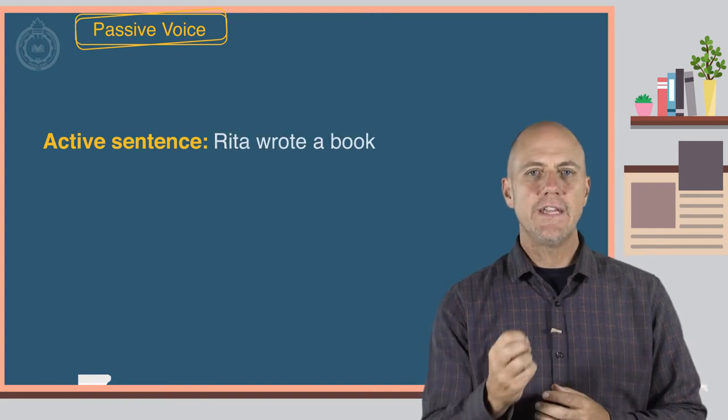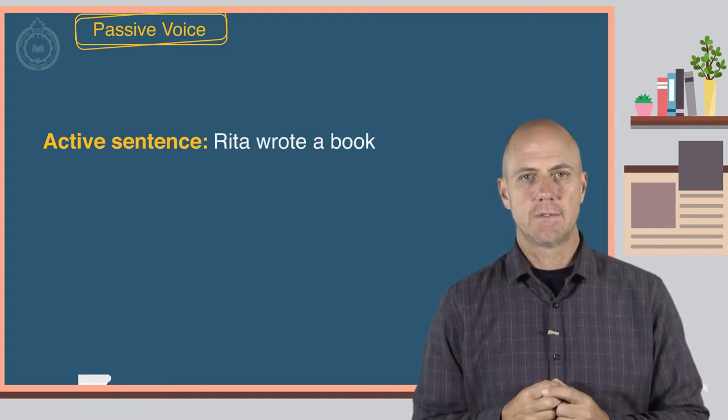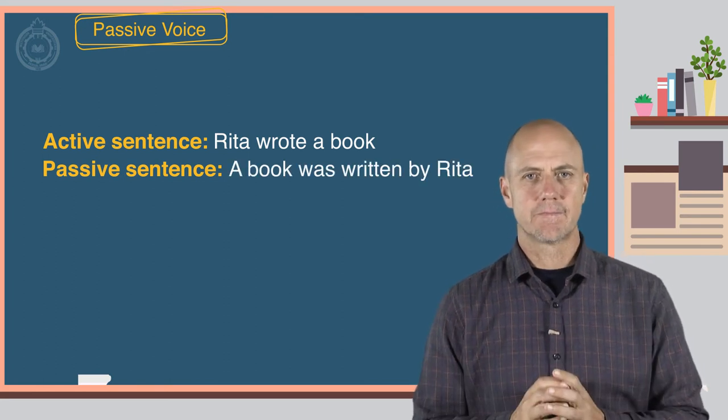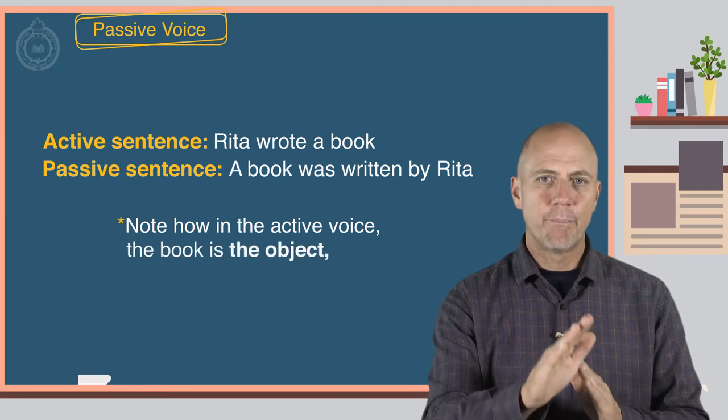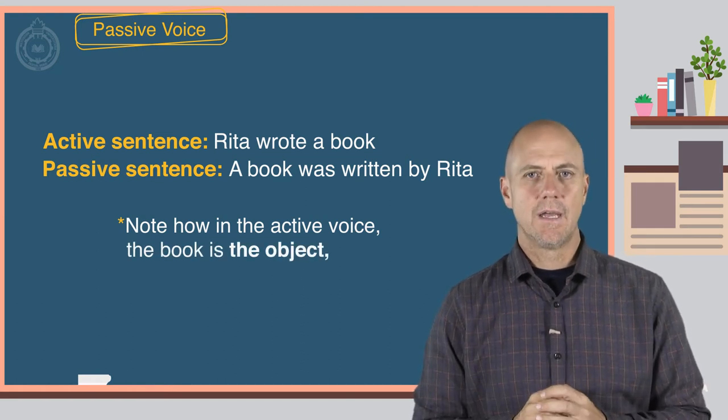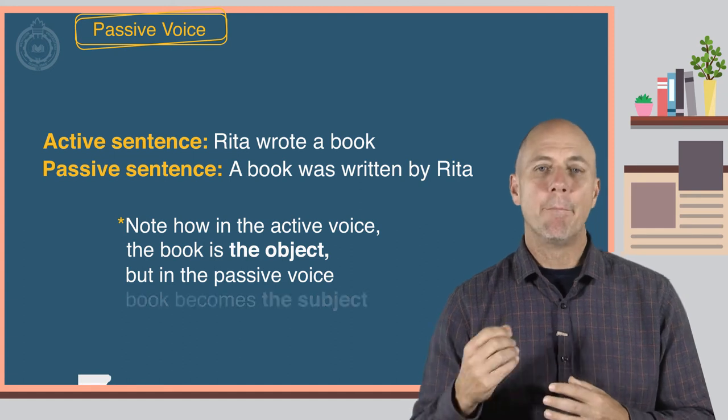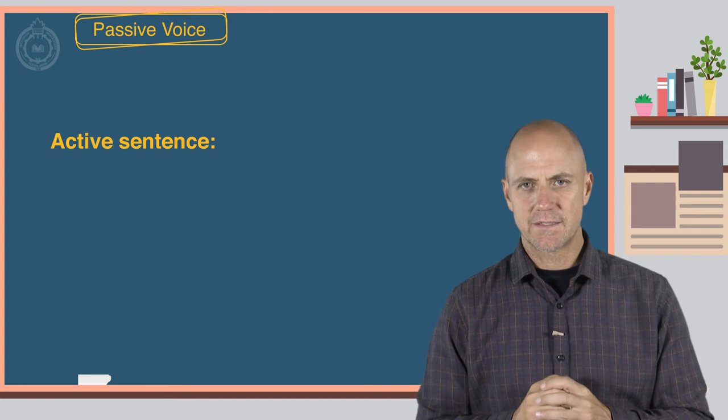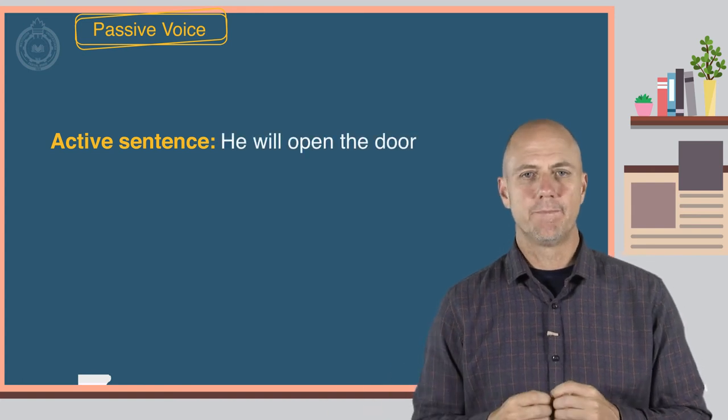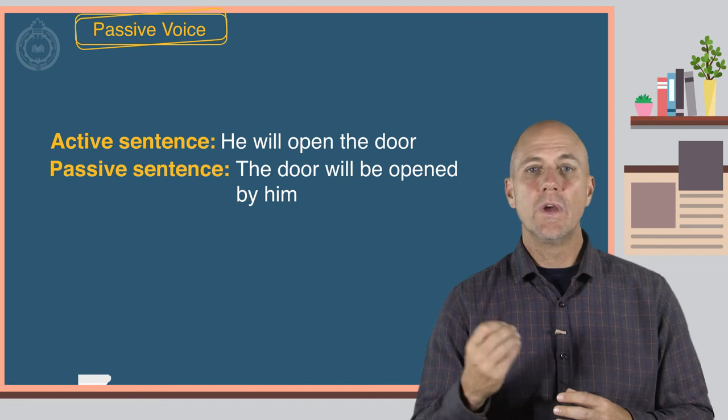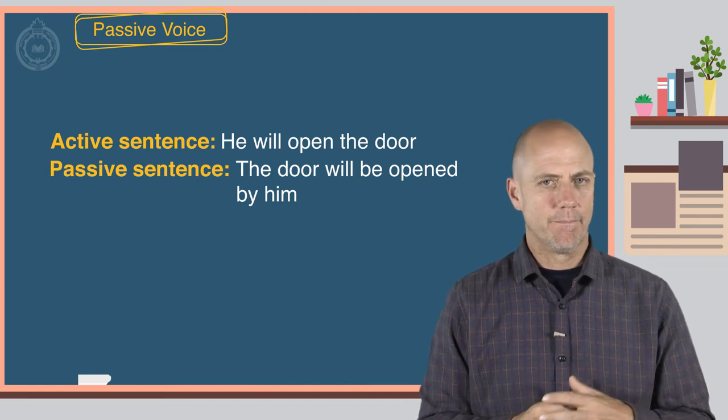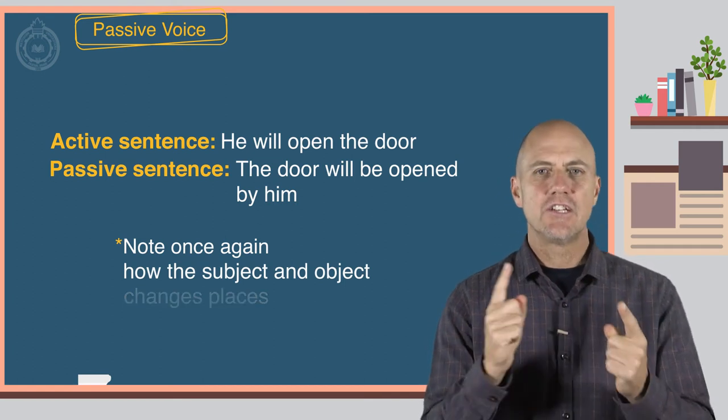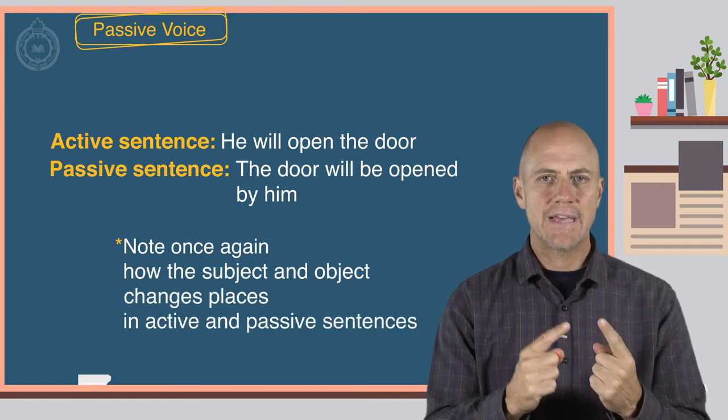Active sentence: He will open the door. Passive sentence: The door will be opened by him. Note once again how the subject and object change places in active and passive sentences.